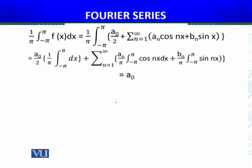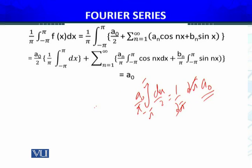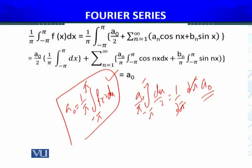a_naught is a real number. Ultimately, if I integrate from minus π to π, I get 2π times a_naught over 2π, which gives a_naught. So the expression of a_naught will be 1 over π times the integral from minus π to π of f(x)dx.